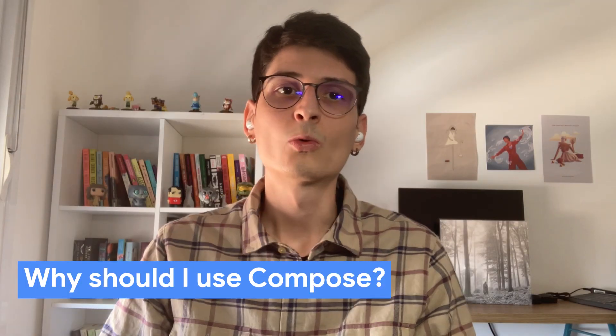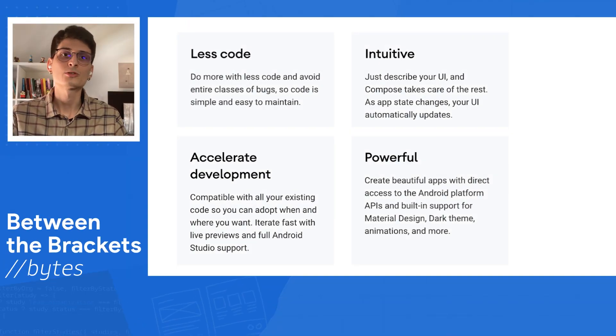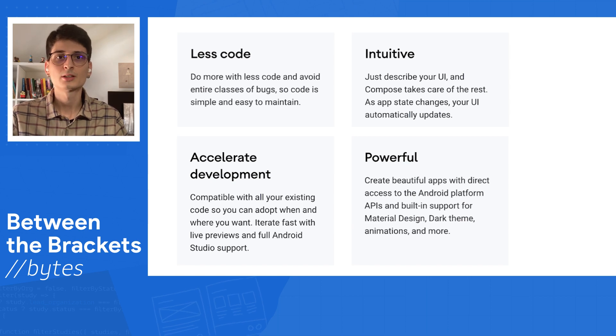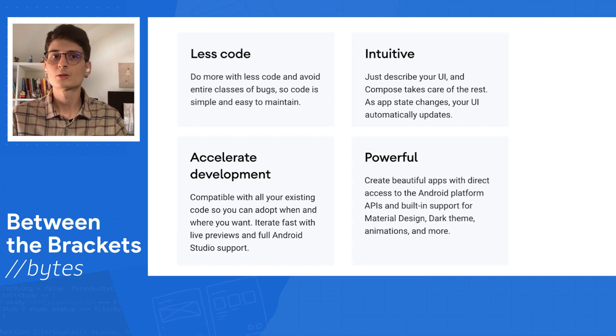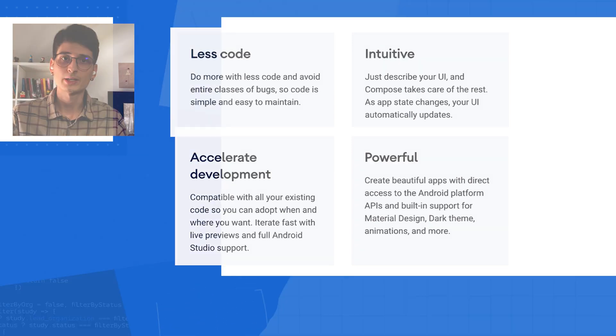Why should I use Compose? With Jetpack Compose, you can create better apps faster and also using Kotlin syntax. No more mixing XML and Kotlin. It also uses a declarative API, which allows us to just describe what the UI should do and let Compose take care of the rest. In addition, the declarative API helps create a single source of truth, reducing inconsistent states and bugs. All of this will accelerate your development, both with new and existing apps.